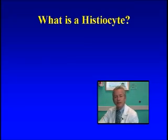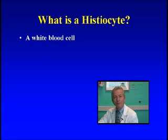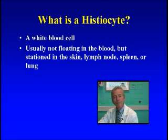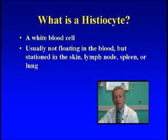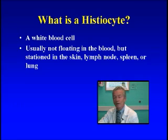So what is a histiocyte? It's a white blood cell found in the body, but not normally swimming around in the blood like other white cells — so when your doctor does a regular blood count, they don't count histiocytes. We find them in tissues. They're normally in the skin, lymph nodes, and spleen, and sometimes in the lung. If they're found in the bone marrow or liver, they're distinctly abnormal, and that's where we find the disease in some patients with LCH.